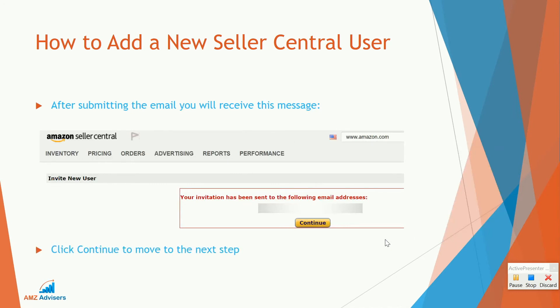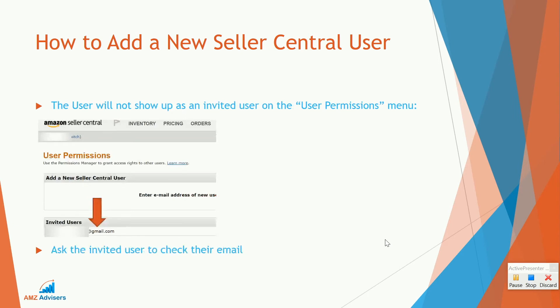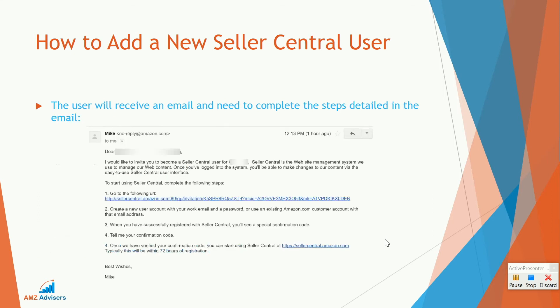You're going to get a confirmation message after you send the email. Once the access has been submitted, this new user will show up as an invited user on your account. There are still certain steps that need to be taken before they'll actually have access. This is an example of the email they're going to receive from Seller Central letting them know what they need to do to get everything completed.